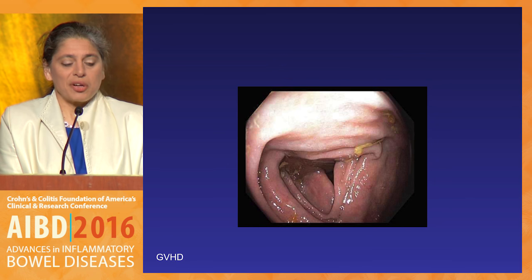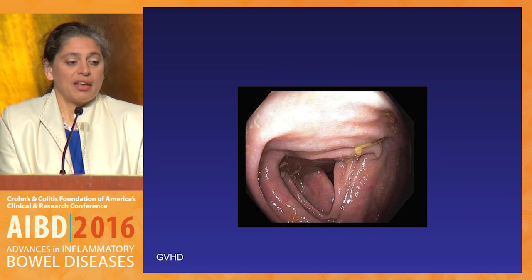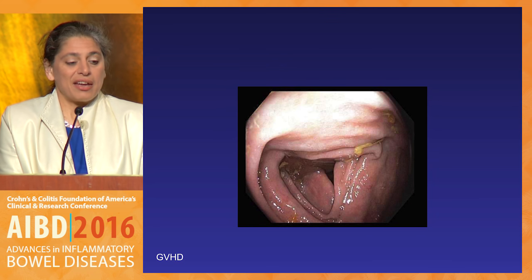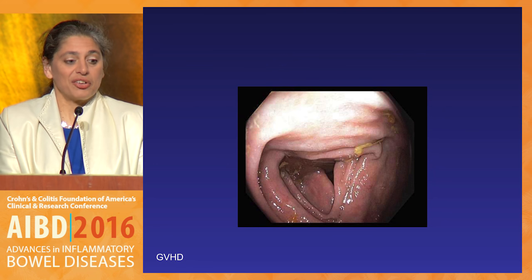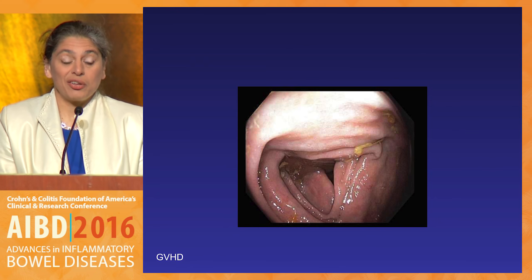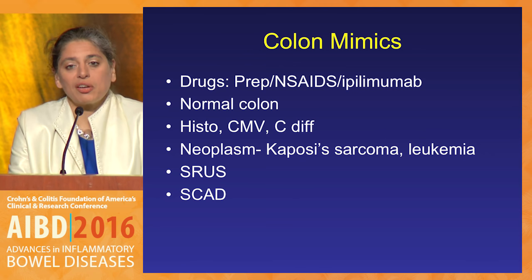Looking at this image, it appears pretty normal — a little erythematous, without the nice vascular pattern you would like. This patient was complaining of diarrhea. It turns out the patient had graft-versus-host disease — they were sent for open endoscopy, and nobody knew that this patient was on chemotherapy for refractory leukemia and had already had a transplant. They had been treated for colitis, but it turned out to be graft-versus-host disease. Again, you need the right clinical history and endoscopic and histologic appearance.